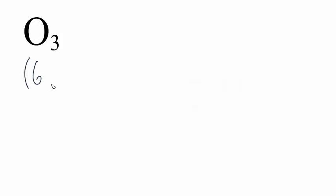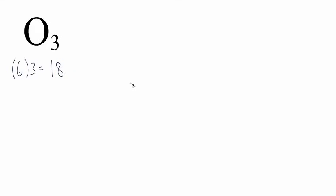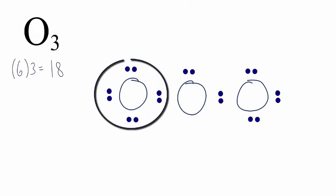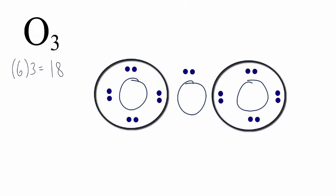O3 is also called ozone. We have six valence electrons for oxygen, and we have three oxygens, for a total of 18 valence electrons for this Lewis structure. We'll write the three oxygen atoms next to each other. Next, we'll put electrons between the oxygen atoms to form the chemical bonds — we've used two, so we have 16 more. Let's complete the octets on the oxygens on the outside. We've used 16 valence electrons; we have two more and we'll put those on the central oxygen. The oxygens on the outside have octets, but that central oxygen only has six valence electrons.